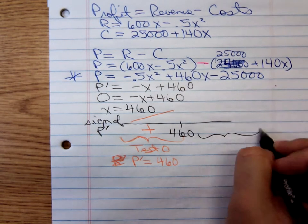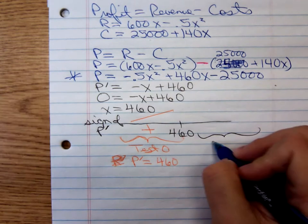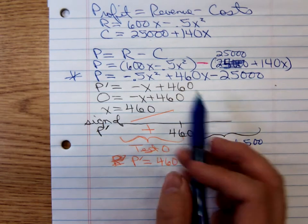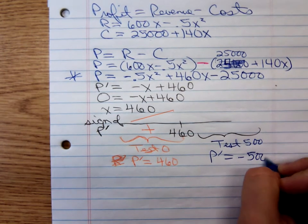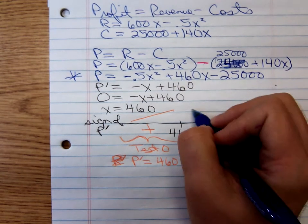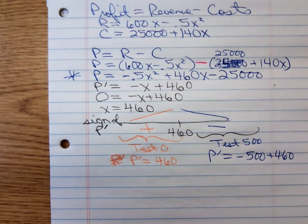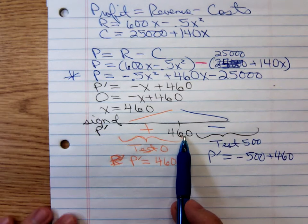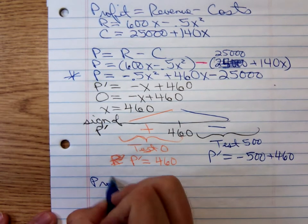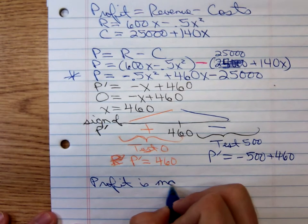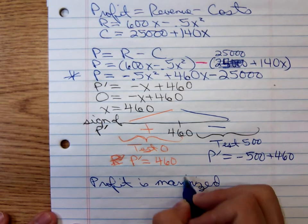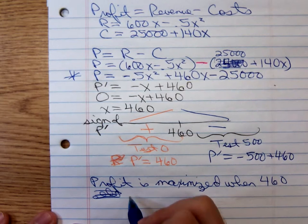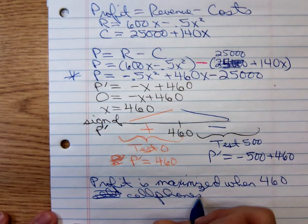If we test 500, we'll get p prime equals a negative 500 plus 460. That's negative. So to the right, it better have been decreasing, and yes, it was. So profit is maximized when they produce and sell 460 cell phones. I'll write that out. Profit is maximized when 460 cell phones are sold.